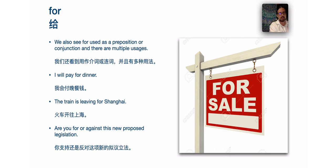We also see 'for' used as a preposition or conjunction — a different word belonging to a different word class. There are multiple usages: 'I will pay for dinner,' 'The train is leaving for Shanghai,' and 'Are you for or against this new proposed legislation?'